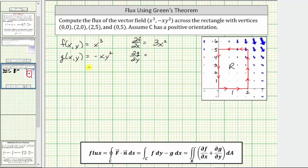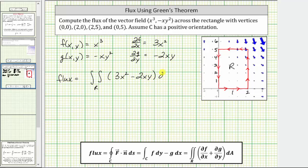The partial of G with respect to Y is negative X times two Y, which means the flux is equal to the double integral over the region R of the partial of F with respect to X plus the partial of G with respect to Y, which equals three X squared minus two X Y, differential A.